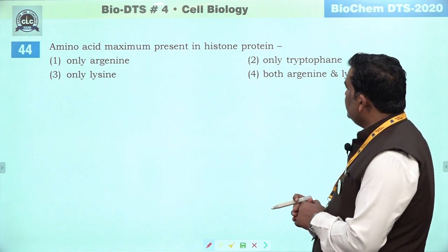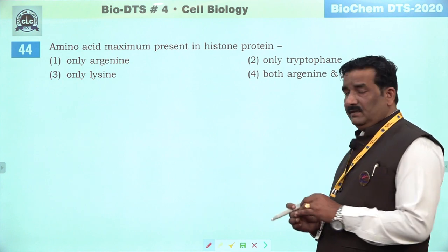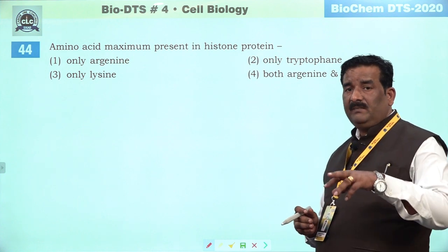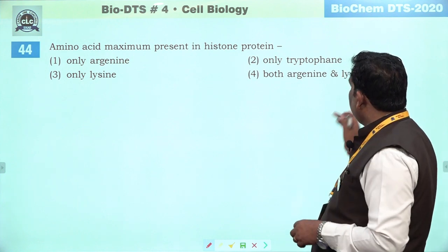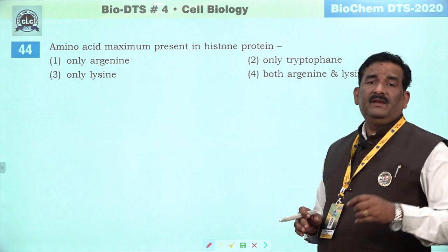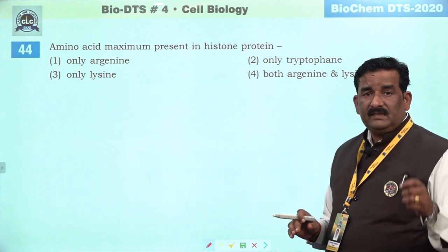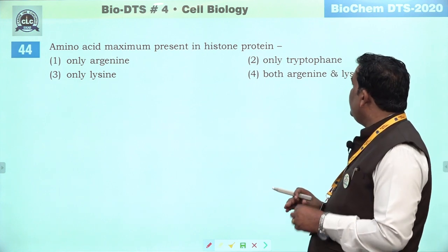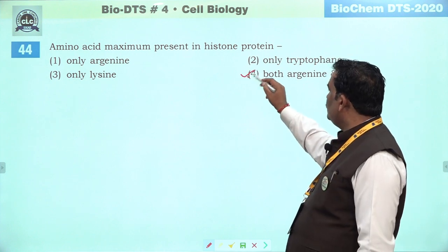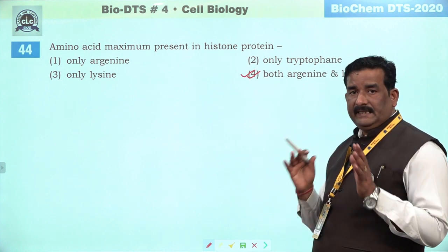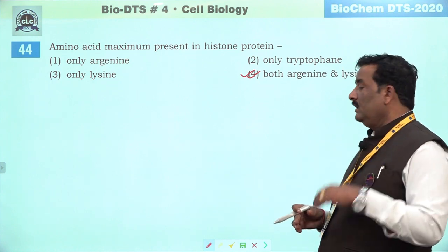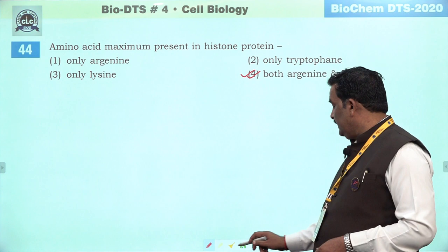Next question: amino acid maximum present in histone protein. Isi ki bajah se uska nature decide hota hai — ki yeh acidic hogi ya basic hogi. Arginine and lysine — NCRT based information hai — they are mostly present in histone protein. Isliye humare paas ek behtar option hai — fourth option par hum chalenge, right answer hai woh. Inki bajah se uska positive charge aur woh basic nature ki banti hai.